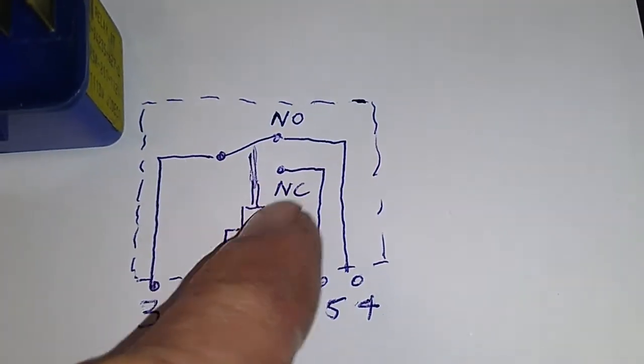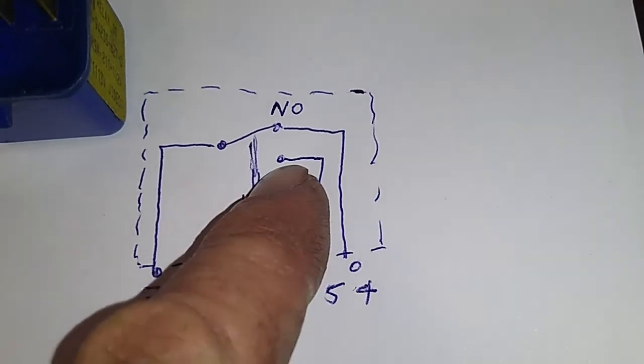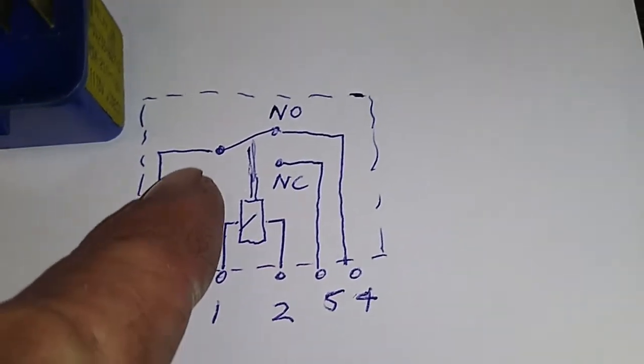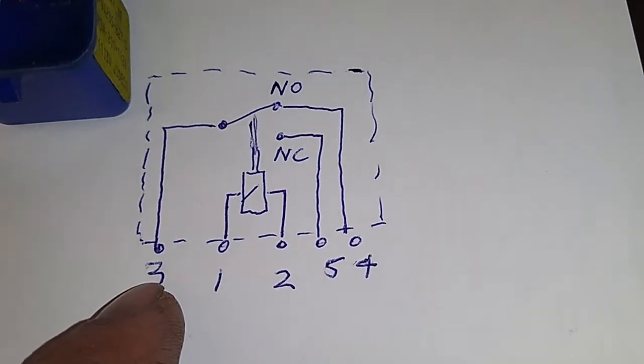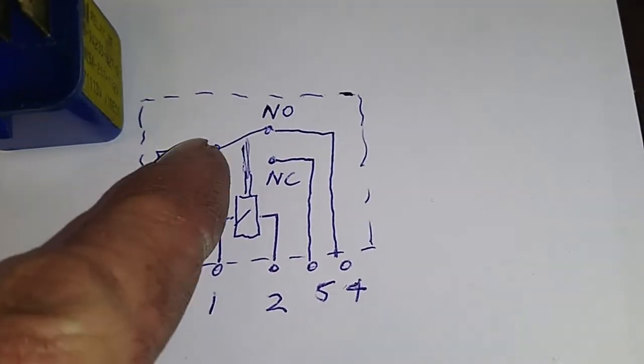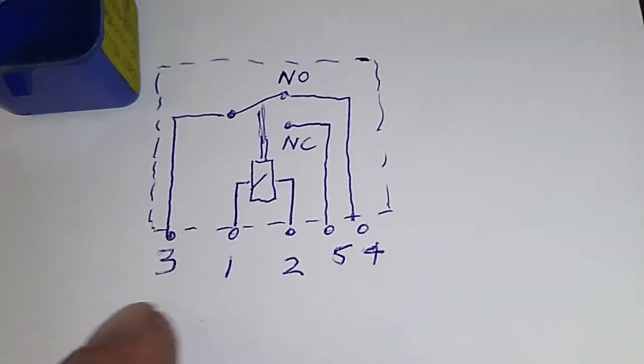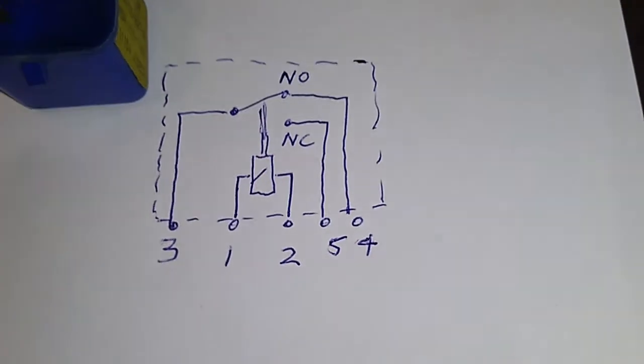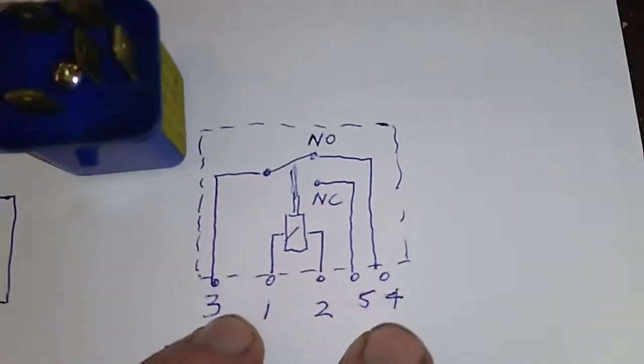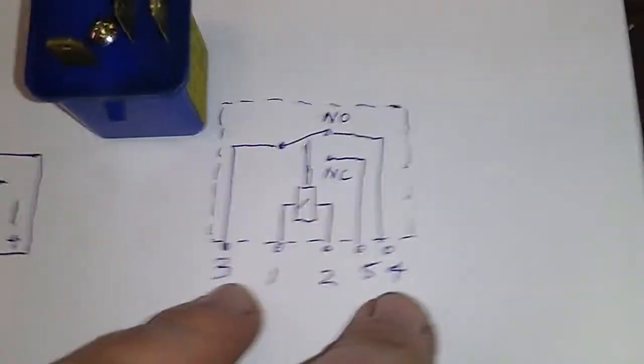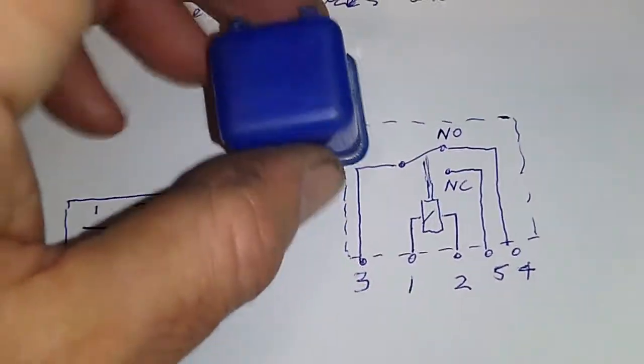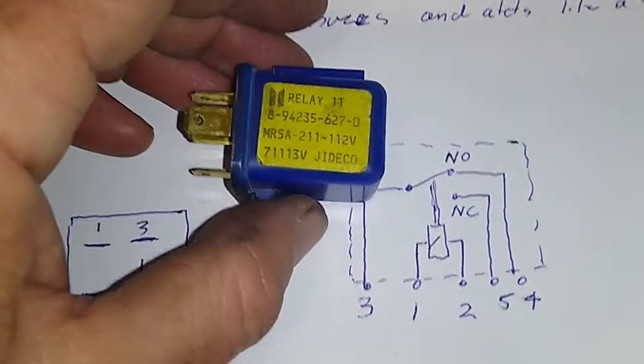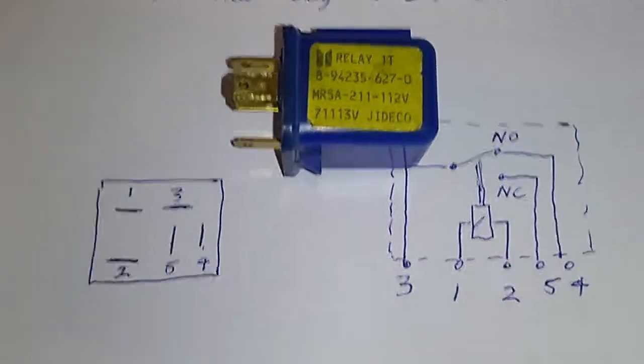So when it's energized, it will go down to normally closed and allow power to come in here and out here. And when it's in an open state or only energized, it's normally open, so the power will flow between pin 3 and pin 4. And that is the state which this relay is used the majority of the time in operation. So it's nothing more than just a simple basic relay. It's just blue.